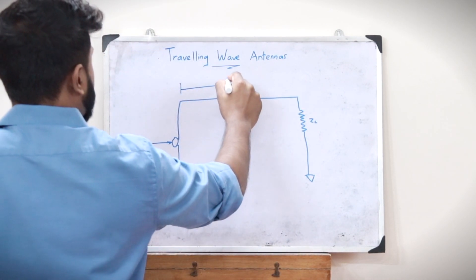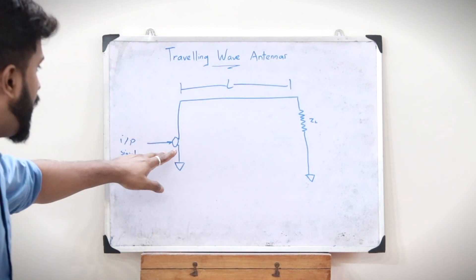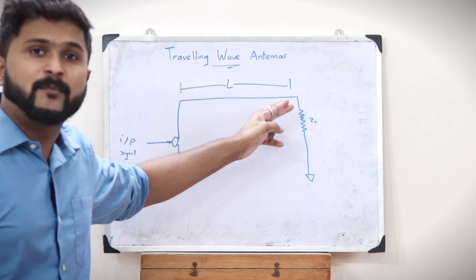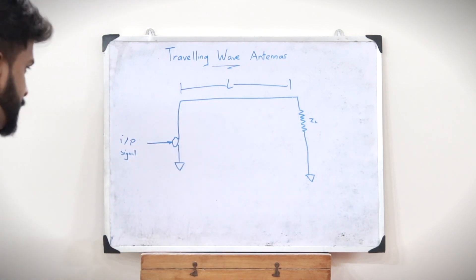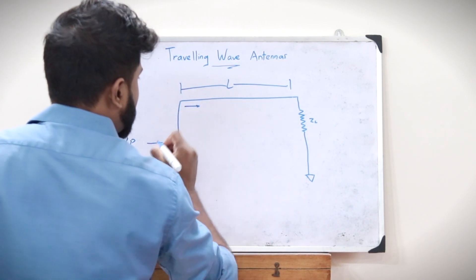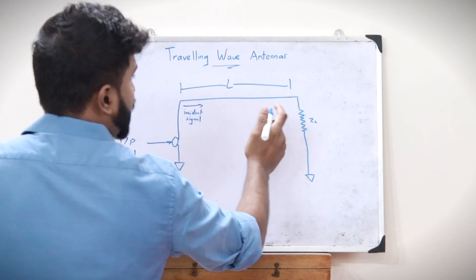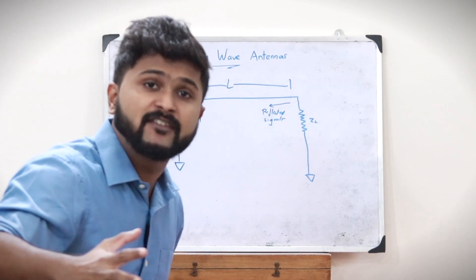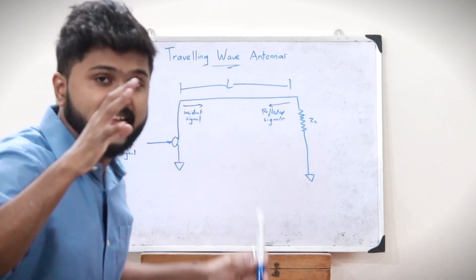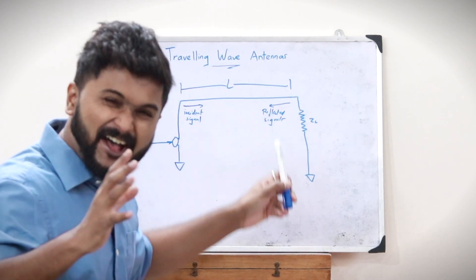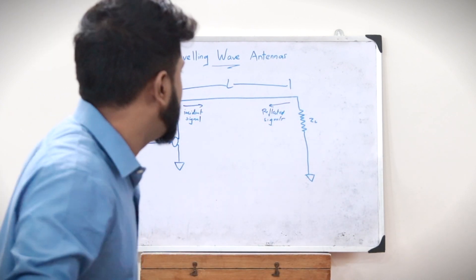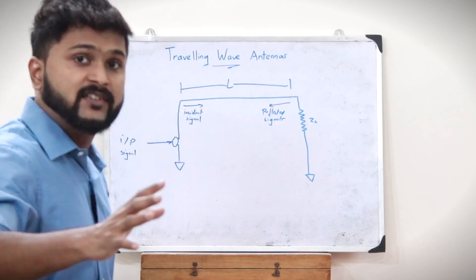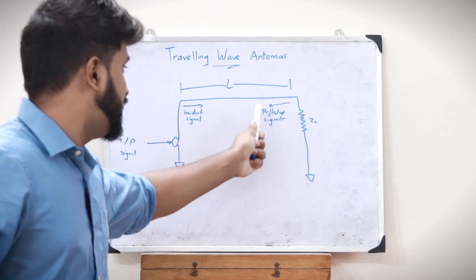If this is the length L, and this is one end where the input signal is given, then this other end is terminated by a particular characteristic impedance ZL. In antennas, if this is the incident signal, these signals will reach here and get reflected back — these are the reflected signals. In traveling wave antennas, these reflected signals are very less because this end is terminated by a characteristic impedance, and therefore standing waves are completely absent.